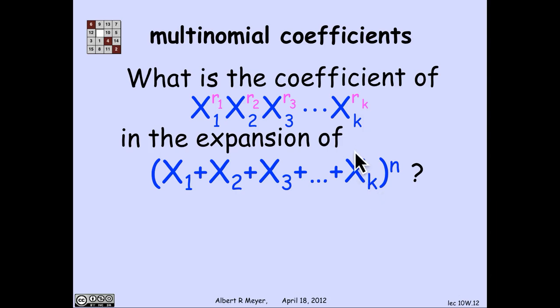If I ask how many of those products of any of these k variables have this many x1's, this many x2's, through this many xk's, I'm asking again a bookkeeper question, and the answer is n choose r1, r2 through rk.